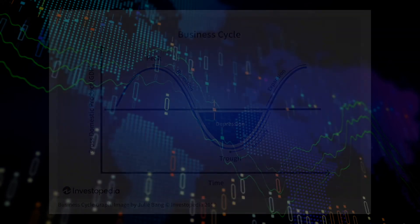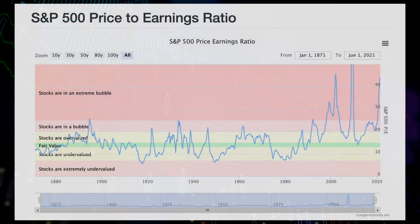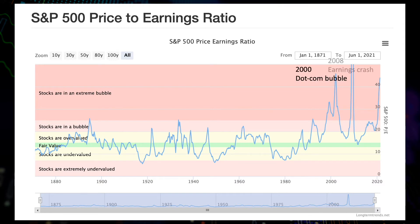Looking at the S&P 500 P/E ratio — the regular trailing 12-month version — we can see many small spikes. The most significant spikes most recently, before the COVID-19 pandemic, were the 2000 dot-com bubble and the 2008 subprime mortgage crisis. These spikes are caused by the earnings crash rather than price spikes, except for the one before the burst of the 2000 dot-com bubble, which signals the stock market living in a dream bubble.